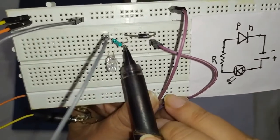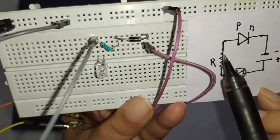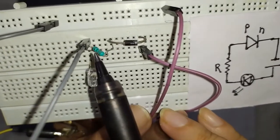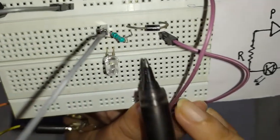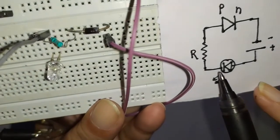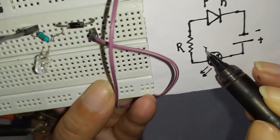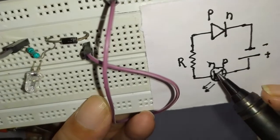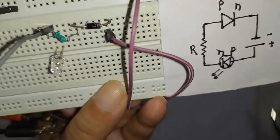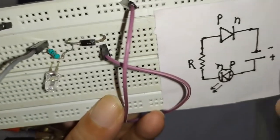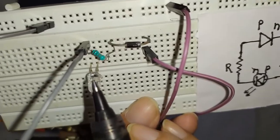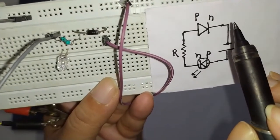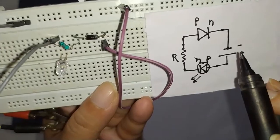The P side of the diode is connected with a resistor. The other end of the resistor is connected to the N side of the LED, and the P side of the LED is left to connect to the positive terminal of the cell. The N side of the diode will be connected to the negative terminal of the cell.